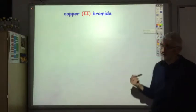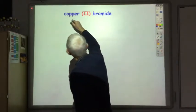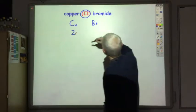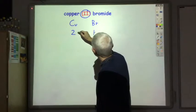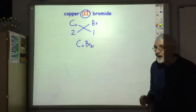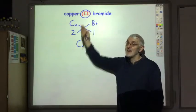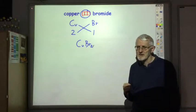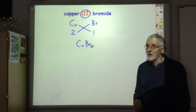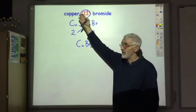Here's an example: copper two bromide. Copper is a transition metal, so the Roman numeral II tells you the valency of the copper is two. Bromine is Br, and it's in group seven so it has a valency of one. So we've got one copper and two bromines: CuBr2. Occasionally you'll get a compound where they tell you the valency of an element that isn't actually a transition metal — some heavy elements don't follow normal valency rules — but whenever Roman numerals appear in a chemical name they're telling you the valency of that element.